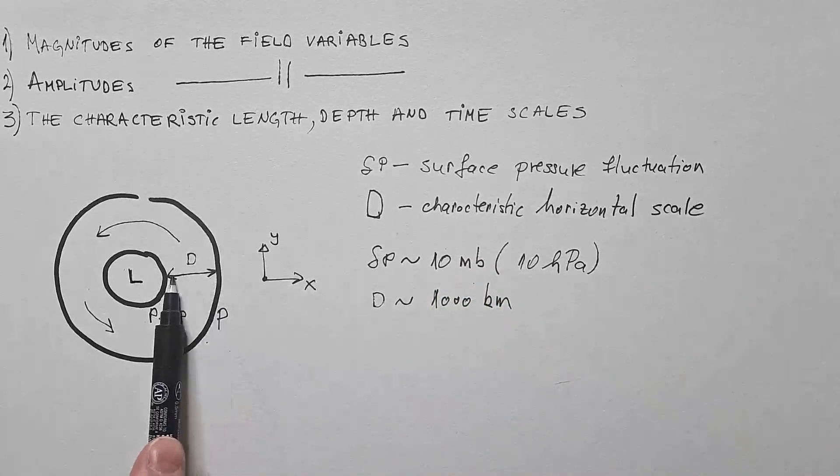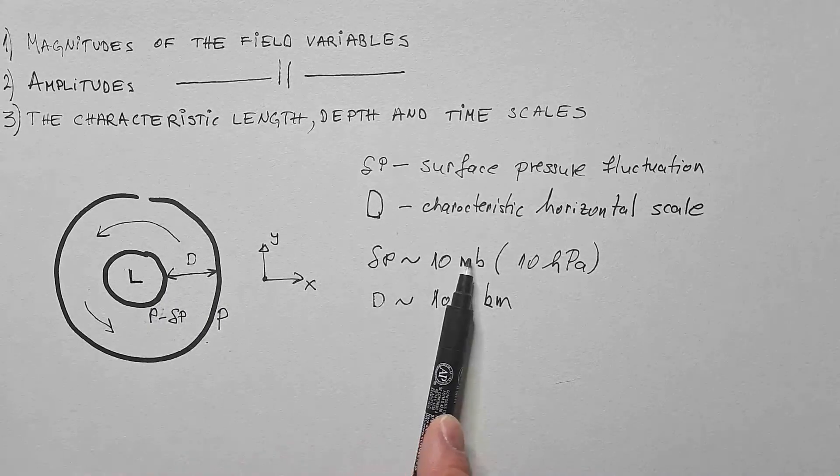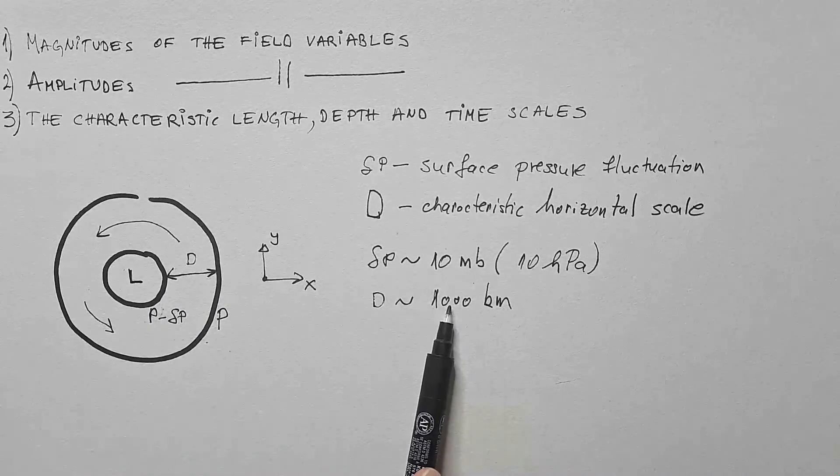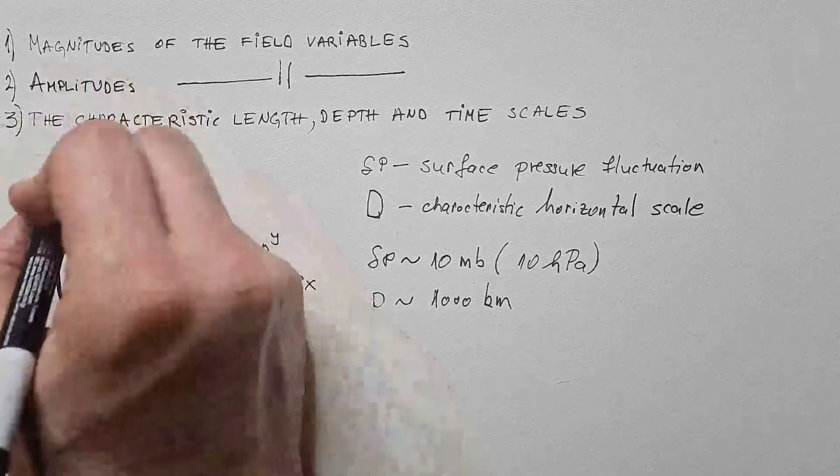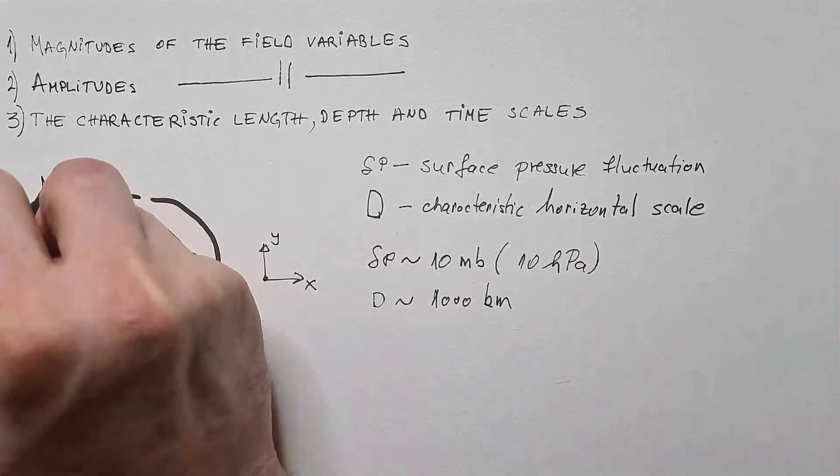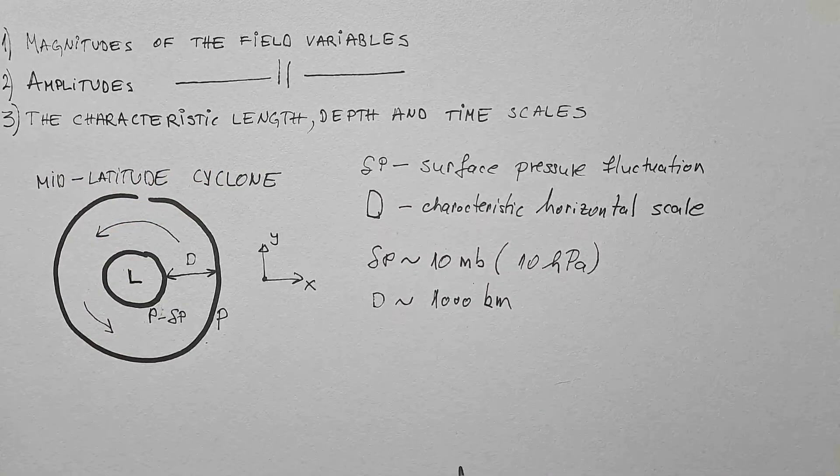So pressure generally drops 10 millibars over 1000 kilometers in mid-latitude cyclones. So let me write maybe, this is mid-latitude cyclone.